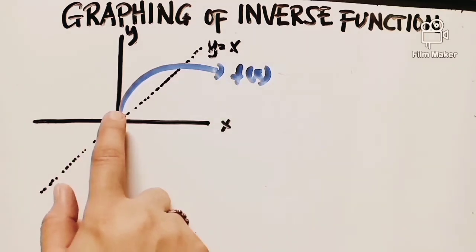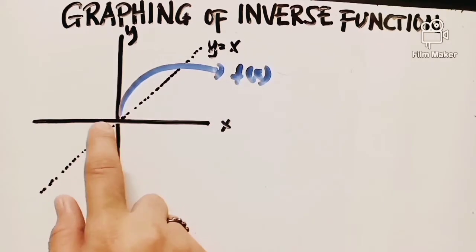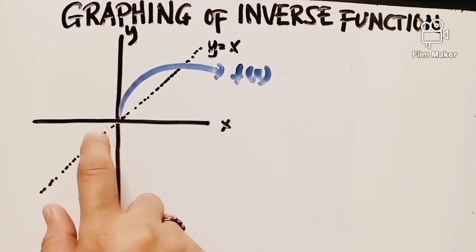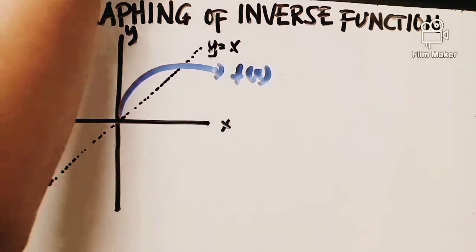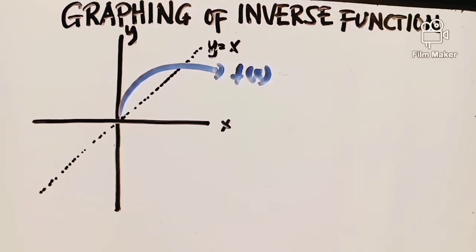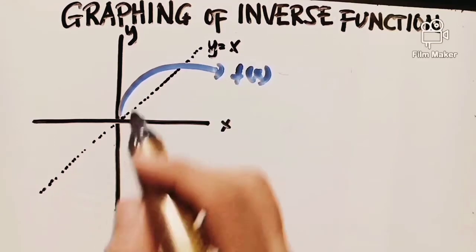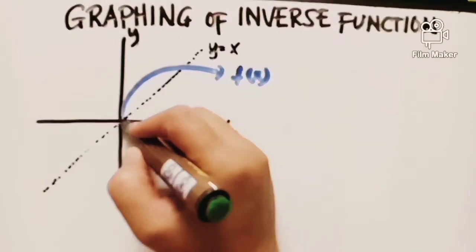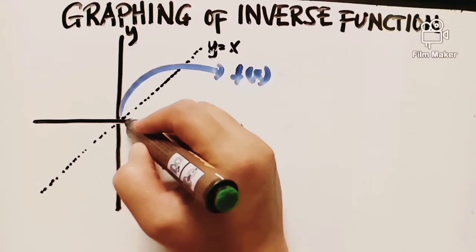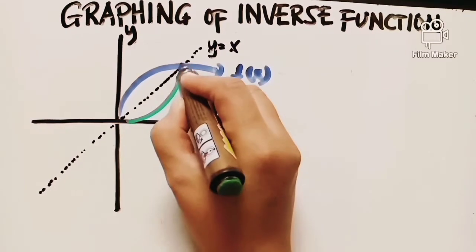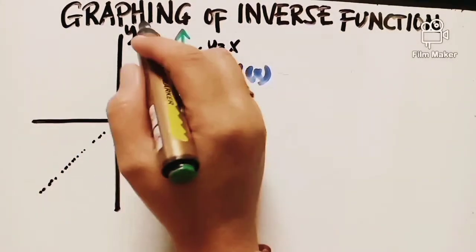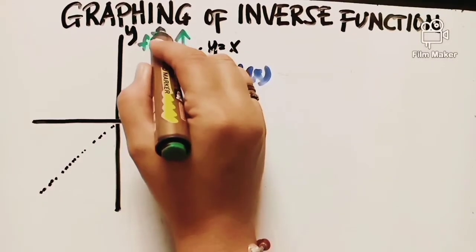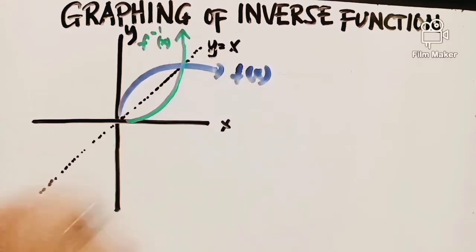So if the graph goes from y going this way, what is its reverse? We draw through here. This will be the reflection. So this is our inverse function. That is how you graph an inverse function.